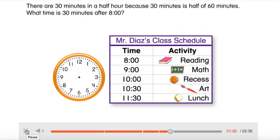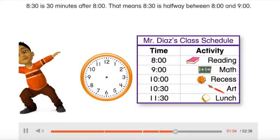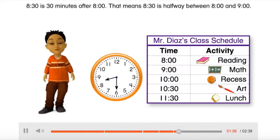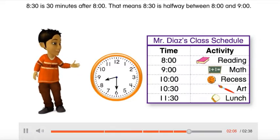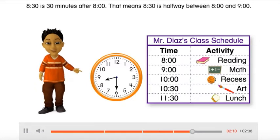What time is 30 minutes after 8 o'clock? Eight-thirty is halfway between 8 o'clock and 9 o'clock. The hour hand points halfway between 8 and 9, and the minute hand points to 6.